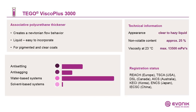Here are some product recommendations. Let's start with Tego VSCO Plus 3000, an associative polyurethane thickener appearing as a clear to hazy liquid, a dilution with 25% active matter. It provides a Newtonian flow behavior; therefore, the anti-settling and anti-sagging properties are rather limited, but it is very well compatible with water-based systems.